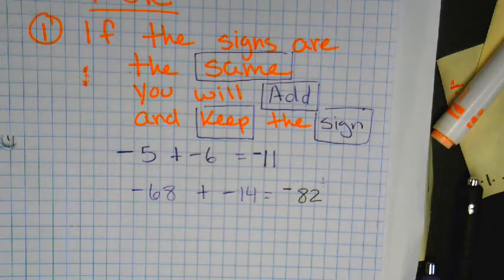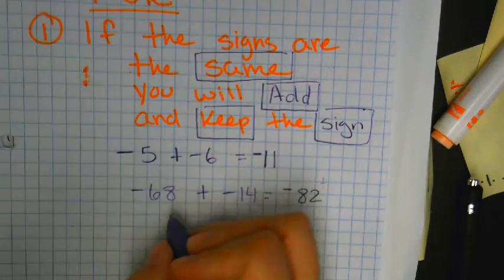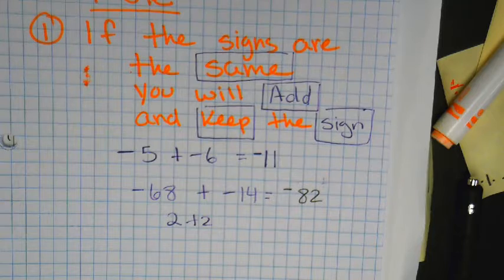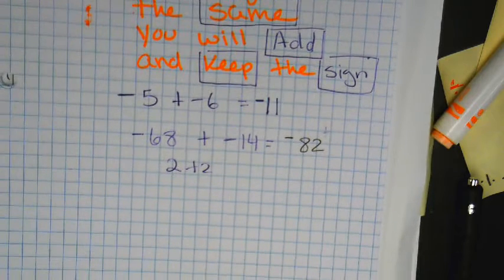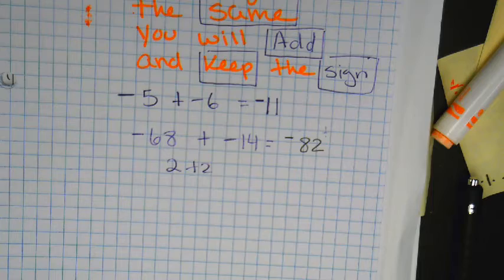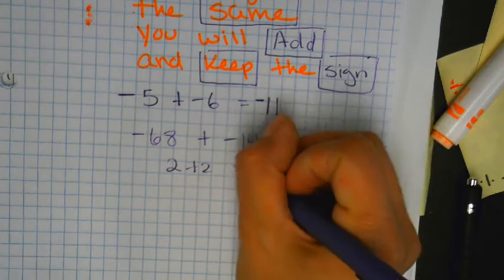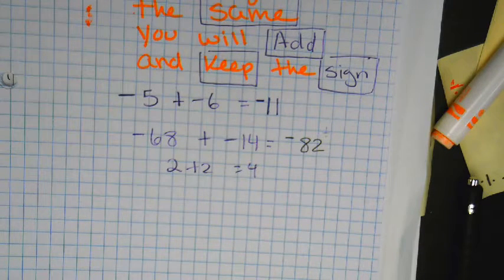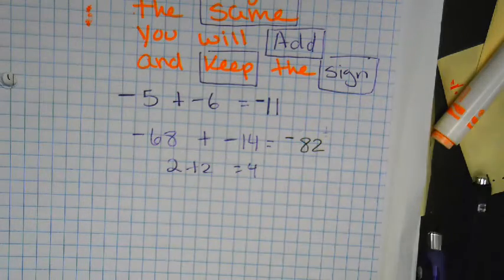Now of course, if it's like 2 plus 2, which you learned in elementary school — what they didn't tell you is, well, they're both positive, so you add them and you keep it a positive. So don't do anything funny with the easy one. If they're both negative, you add and keep the sign. That's rule number one.